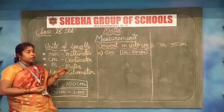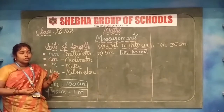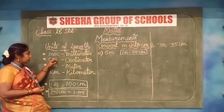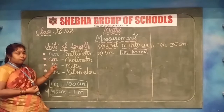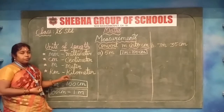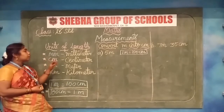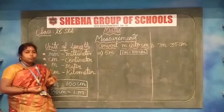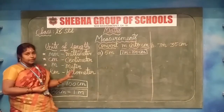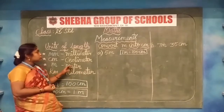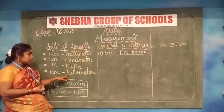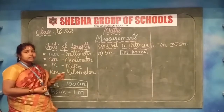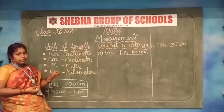Let me explain which is the smallest unit, the biggest unit, and then the standard unit. The biggest unit of length is kilometer. The smallest unit of length is millimeter. The standard unit for length is meter.